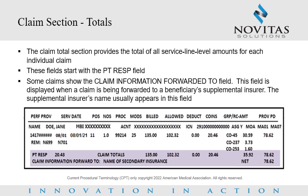Claim section totals. The claim total section provides the total of all service line level amounts for each individual claim. These fields start with the PT RESP field, or patient responsibility. Some claims show the claim information forwarded to field, which is displayed when a claim is being forwarded to a beneficiary supplemental insurer. The supplemental insurer's name usually appears in this field.